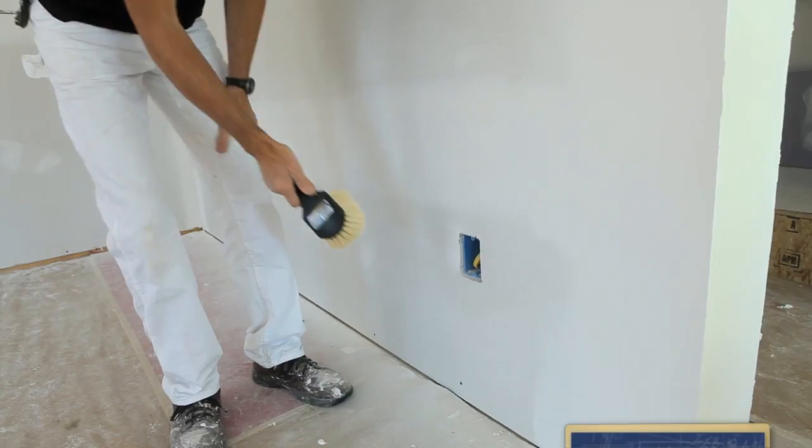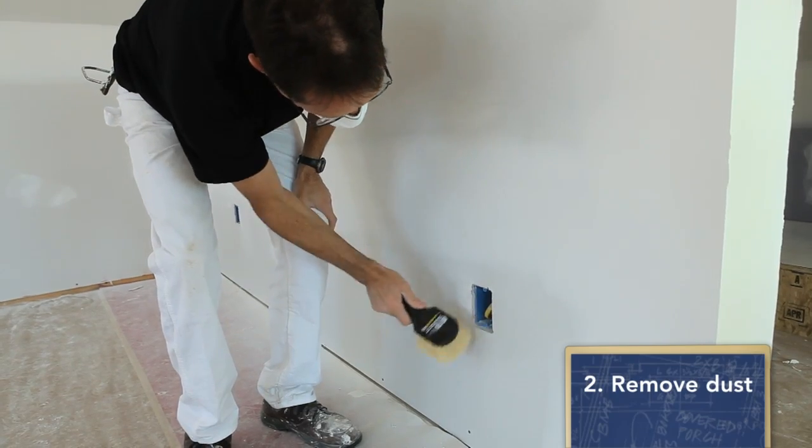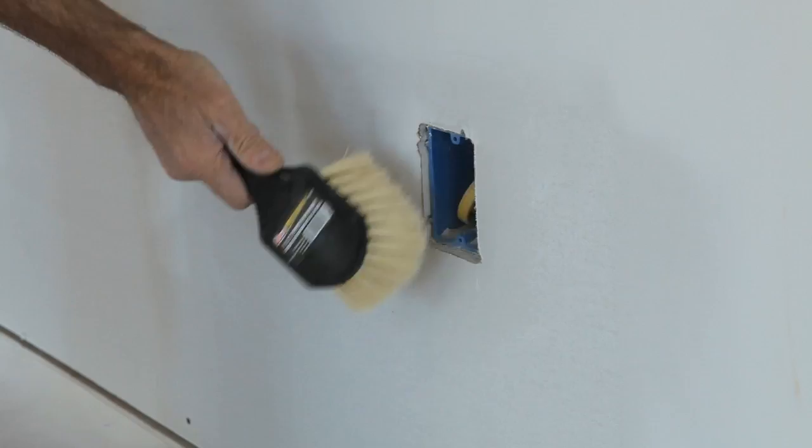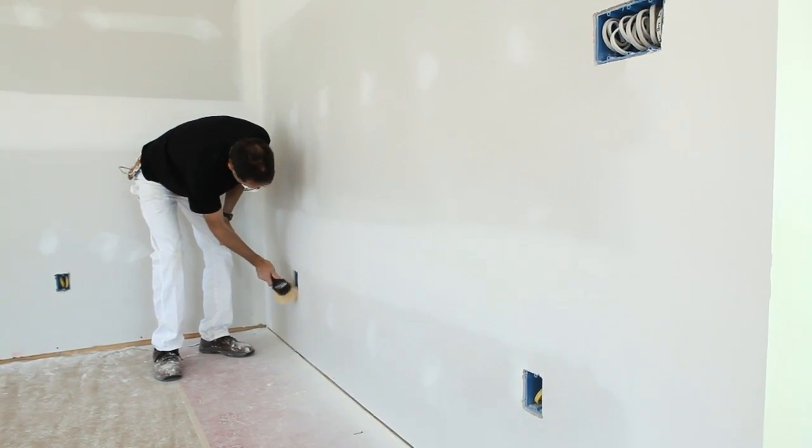Before I go to apply the level 5, I'm going to take a little brush and get all the dust out of the outlets, all the little chunks of compound and debris that are in those outlets, so I don't pick that up with my taping knife as I'm applying the level 5 finish.